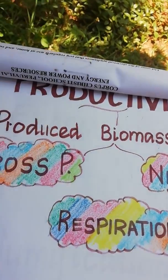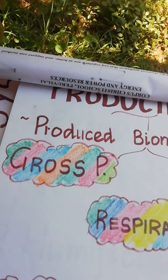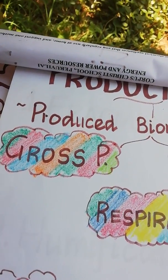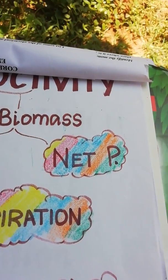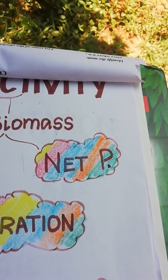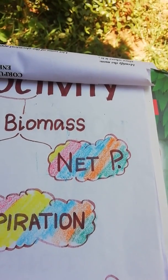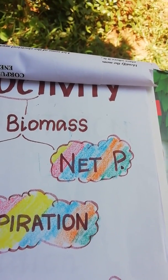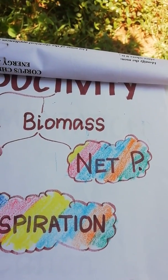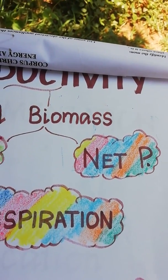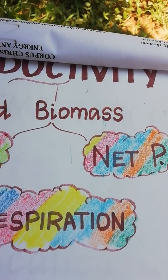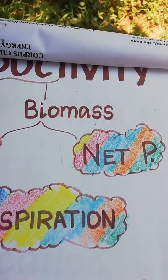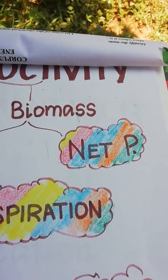Gross productivity is the total productivity of the organism. Net productivity is, after the expenditure, how much is being stored in that organism while it enters into the next trophic level. That is what net productivity.